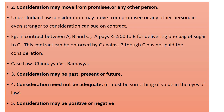In case of future consideration, there is an exchange of promises and the obligation will be fulfilled in future. For example, A ordered for the supply of goods in the next week, and B the supplier also promised to deliver the goods in the next week. In this case, the obligations from both parties are pending — that means both are to perform in future. That is called future consideration.